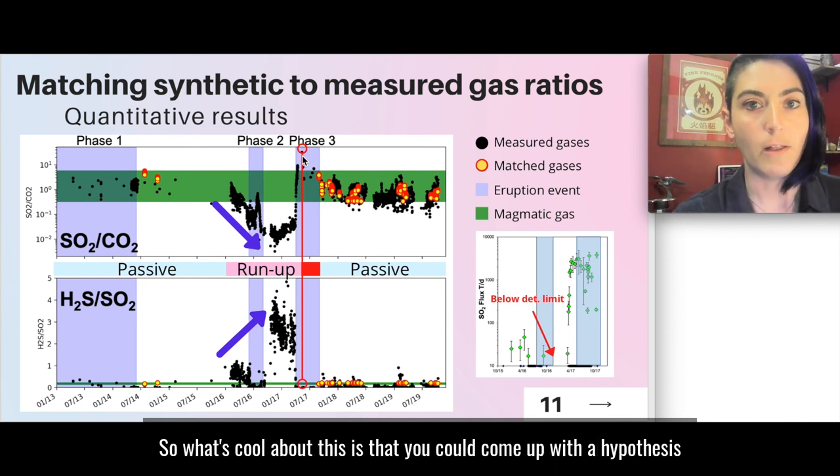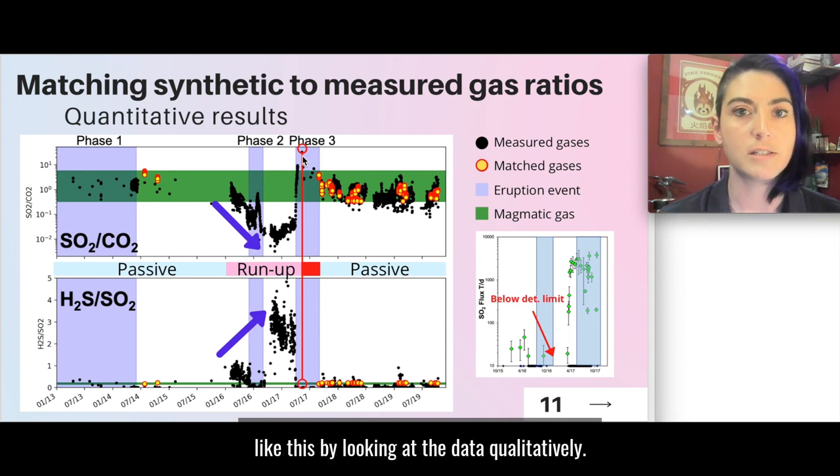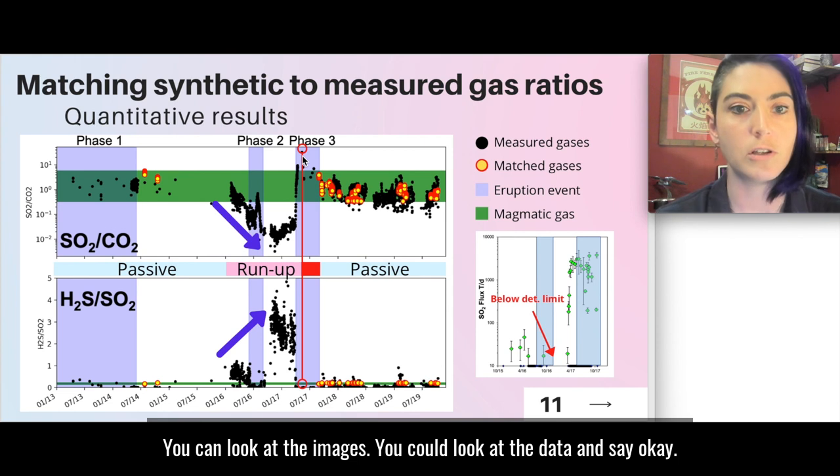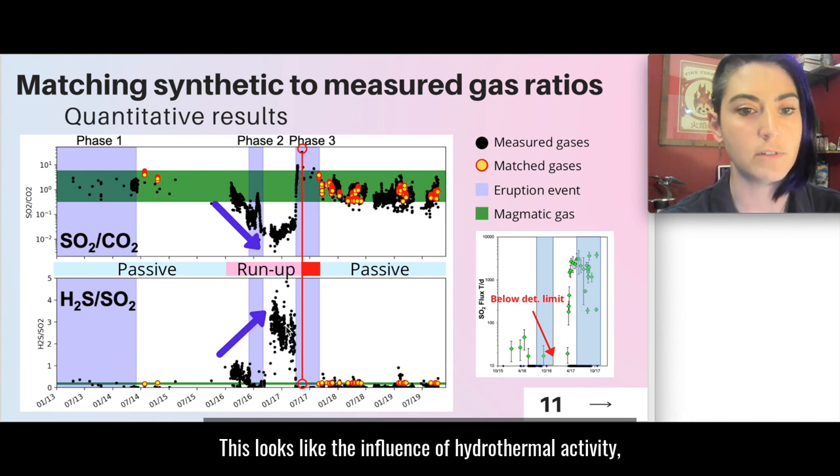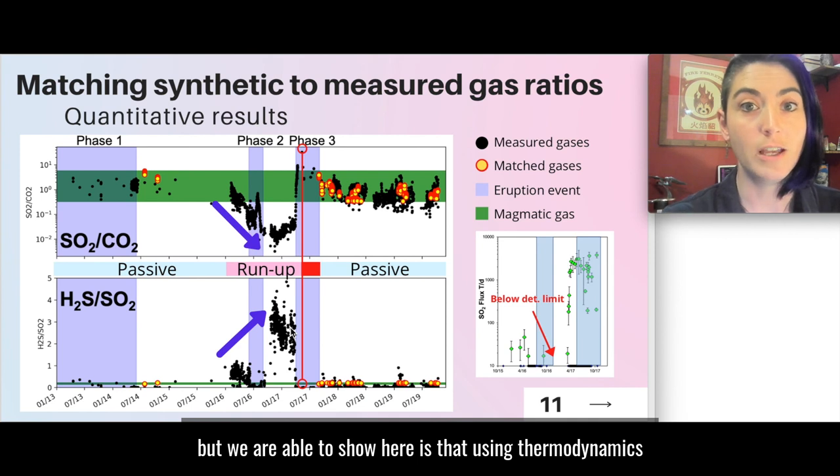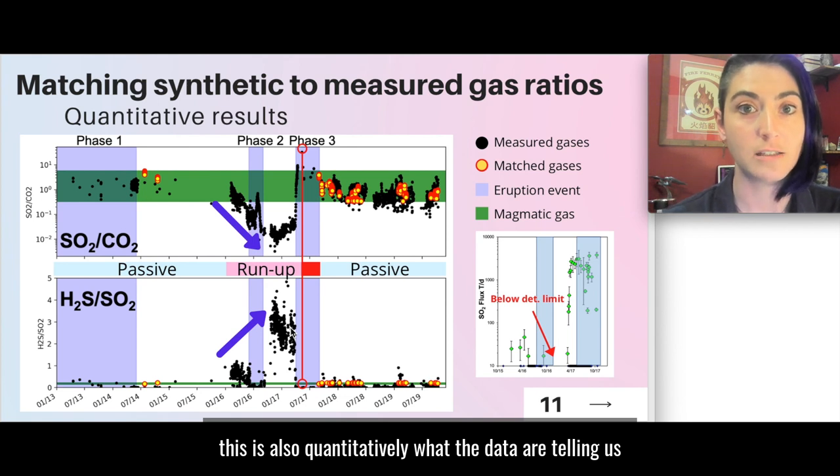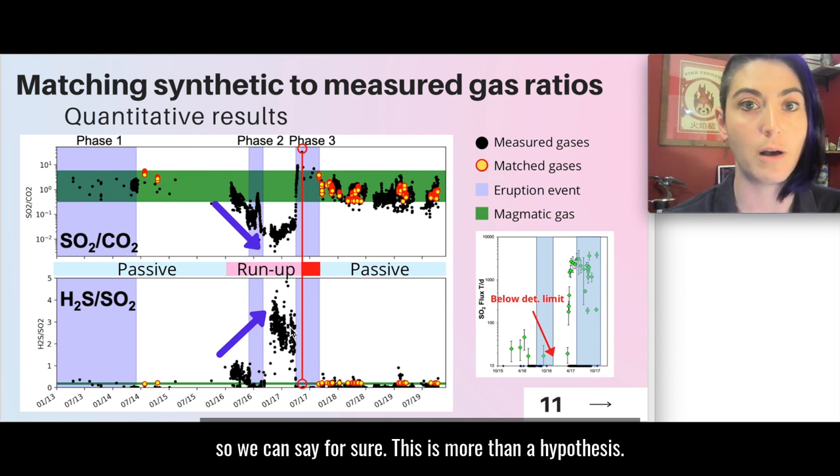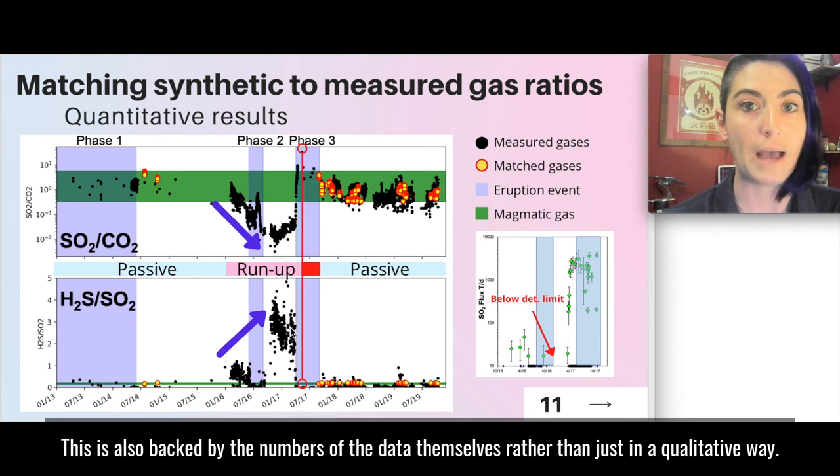So what's cool about this is that you could come up with a hypothesis like this by looking at the data qualitatively. You could look at the images, you could look at the data and say, okay, this looks like the influence of hydrothermal activity. But what we are able to show here is that using thermodynamics, this is also what the data are telling us quantitatively. So we can say for sure this is more than a hypothesis. This is also backed by the numbers of the data themselves rather than just in a qualitative way.